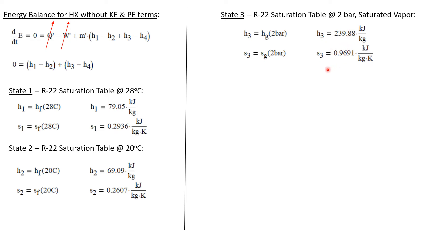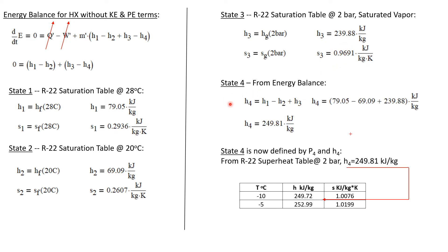State four is not fully defined — all we know about it is its pressure of 2 bar and that it's superheated. But looking at the energy balance, the only unknown is H4. Solving for it: H4 equals H1 minus H2 plus H3. Using the table values, we calculate H4 equal to 249.81 kilojoules per kilogram.